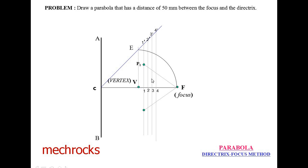Now take 2 to 2 dash as the radius, with F as center, and cut the 2 to 2 dash line only. Name the point above as P3, and similarly below as P4.